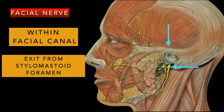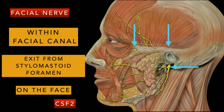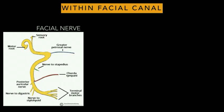Thirdly, the facial nerve gives out terminal branches from within the parotid gland, which basically enter the face — so it has five terminal branches on the face. An easy way to remember the locations is CSF2: C from the facial canal, S from the stylomastoid foramen, and F from the face. The number 2 is to remember that the facial nerve is a nerve of the second branchial arch.